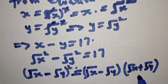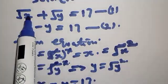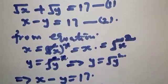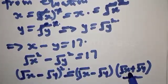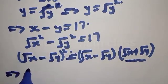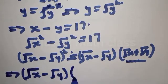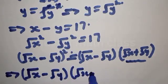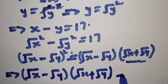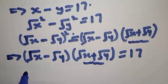We already know from equation 1 that square root of x plus square root of y equals 17. So we can substitute that into our factored expression: (square root of x minus square root of y) times (square root of x plus square root of y) equals 17, and square root of x plus square root of y is 17.